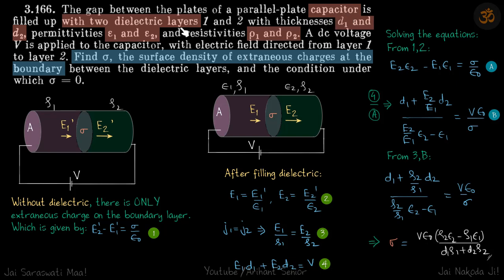We are given a capacitor which has two dielectric layers in between its plates and their thickness are d1 and d2.